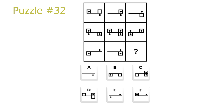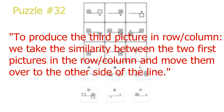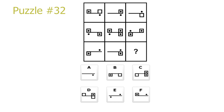This puzzle can be solved either in the rows or the columns. To produce the third picture in a row or column, we take the similarity between the two first pictures in the row or column and move them to the other side of the line.